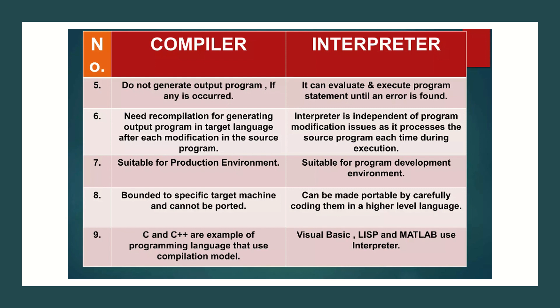Portability is one of the salient features of Python, as Python supports the functionality of an interpreter, and the code can be made portable by carefully copying it in high level language. Some examples of programming languages that use the compilation model are C and C++. Languages that use the interpreter to convert and execute high level language line by line include Visual Basic, Lisp, Matlab, and Python.